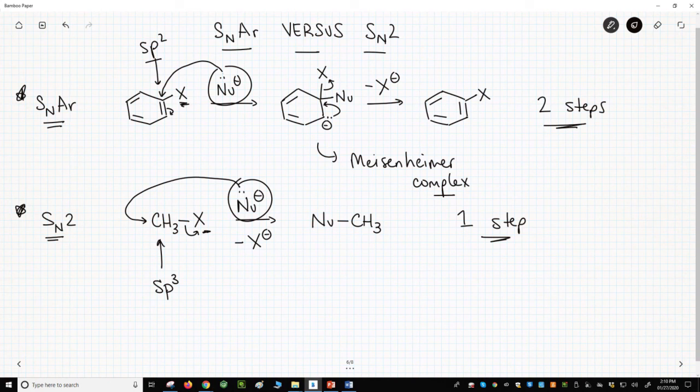In general, substitutions on SP2 carbons go through a two-step sequence of an addition and elimination reaction. So, while the names for SNAR and SN2 imply lots of similarities between the reactions, the mechanisms are completely different.